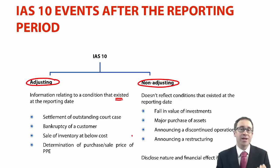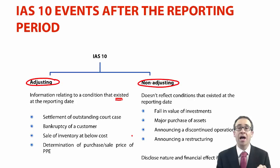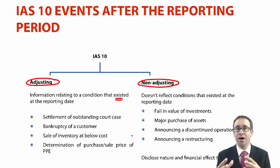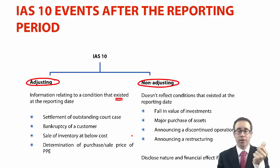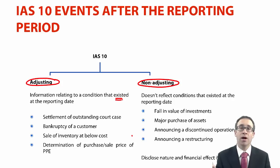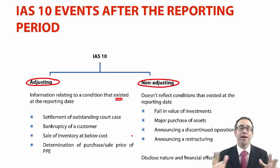A lot of it ties into IAS 37 to start with, because if you have the settlement of an outstanding court case, that gives you a reliable estimate of the court case outstanding at year end, so you can make a better estimate of your provision. A lot of the time when this standard is examined, there is a linkage with IAS 37. Another scenario is bankruptcy of a customer — they don't just go bankrupt overnight. The standard assumes the customer was struggling at the reporting date, so we should impair the value of that receivable, tying into IFRS 9 and impairments of financial assets. If they're bankrupt, we write it off in its entirety.